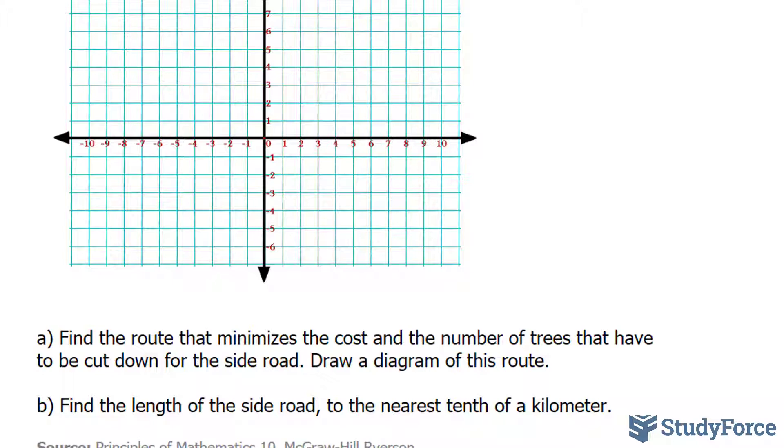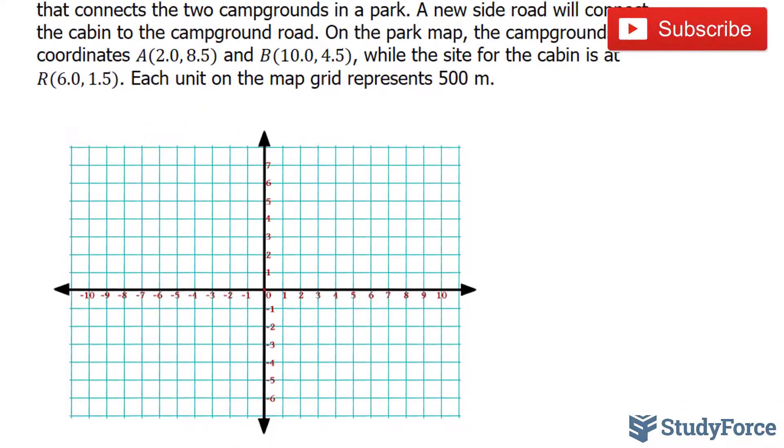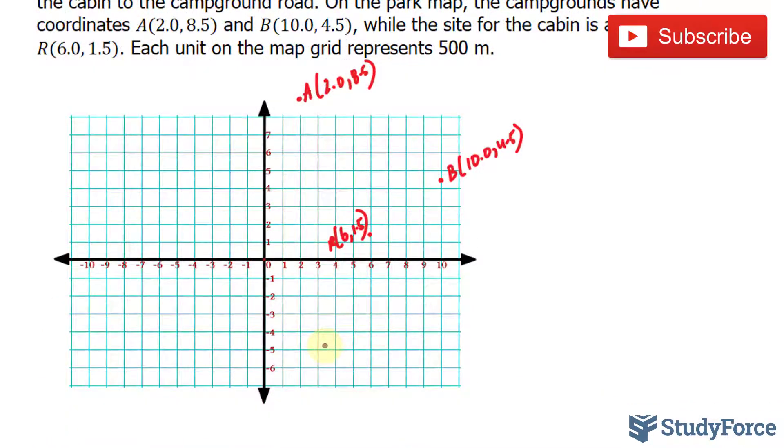Let's start with part A. We need to find the route that minimizes the cost and the number of trees that need to be cut down. We will plot these points. Next, I would like to draw a line that connects A and B that will represent the road that connects A and B. The route that connects R to this pathway should be a straight line that's perpendicular to A and B. That will minimize the costs.